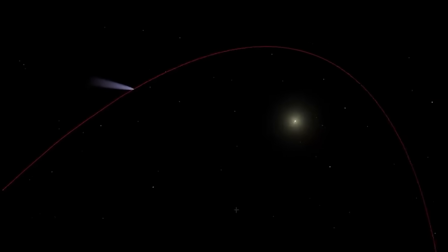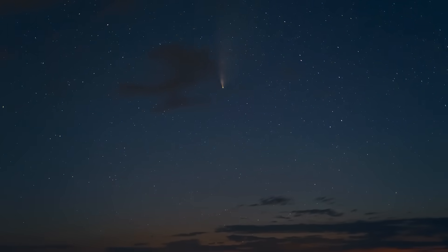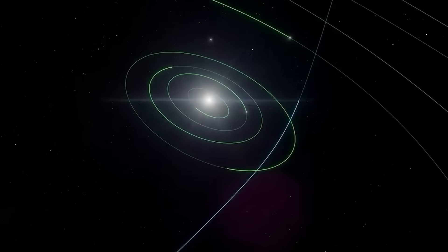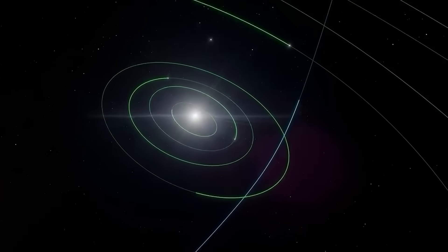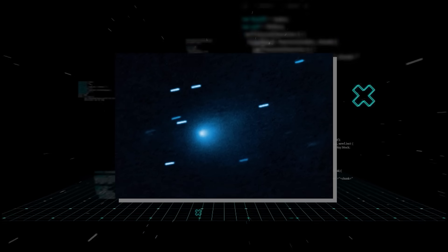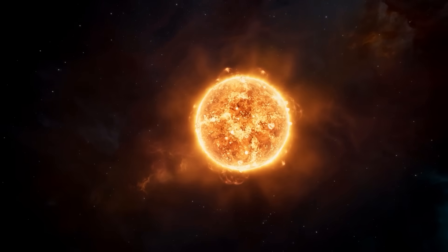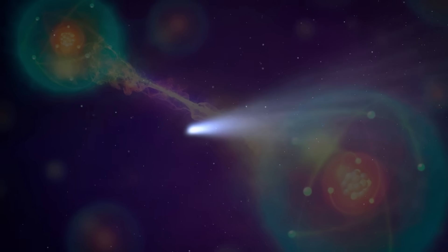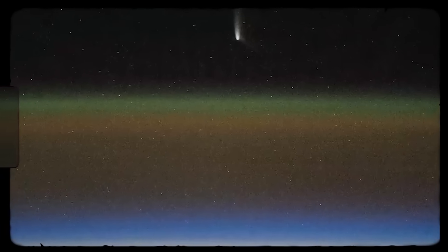Comets get a push from the sun when ice turns to gas and shoots out, like a steam kettle. But that gas always points away from the sun. The plume from 3i Atlas was different. It pointed towards the sun. This detail breaks all the known rules of cometary physics. It was like seeing a boat's wake appearing in front of it.